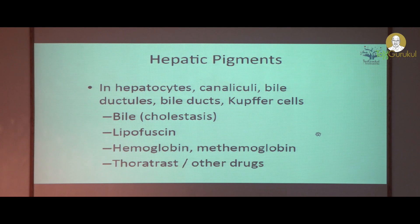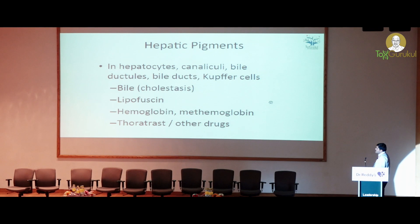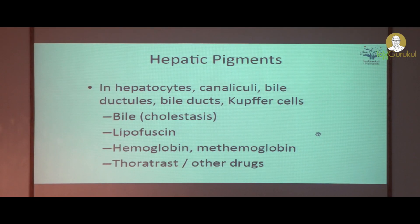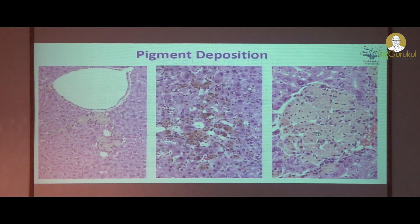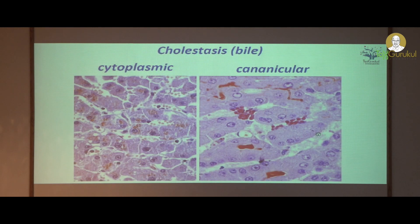Hepatic pigments commonly seen include bile, lipofuscin which is the wear-and-tear pigment, hemoglobin, methemoglobin, or drug-induced pigments. This is the Kupffer cell which has engulfed the pigment — you can see the pigment here. In this slide you can also see pigment within the liver parenchyma. This slide shows cholestasis with bile accumulation in the liver, visible within the cytoplasm and in the canaliculi.